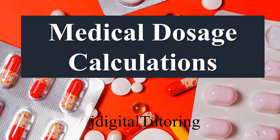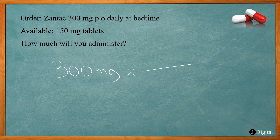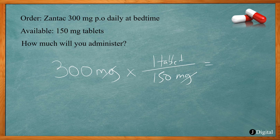In this video we go over how to do medical dosage calculations. This problem says we have Zantac 300 milligrams PO daily at bedtime, so we need 300 milligrams. Each tablet is 150 milligrams, so we multiply 300 by one tablet over 150 milligrams. The milligrams cancel out — 300 divided by 150 gives exactly 2, so the patient takes two tablets.